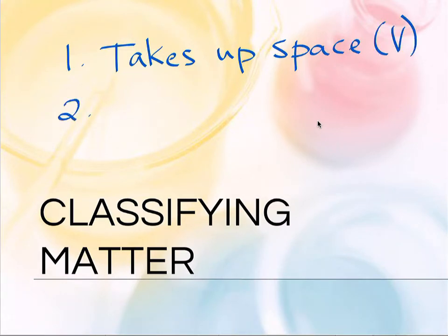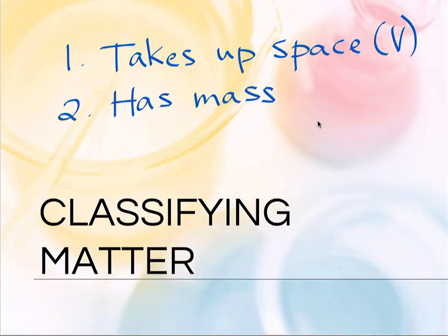And second of all, matter is something that has mass. In other words, it has an inertia that resists a change in motion. That's one of the things that mass measures — the inertia of an object. So if something has mass and it takes up space, then it is considered to be matter.